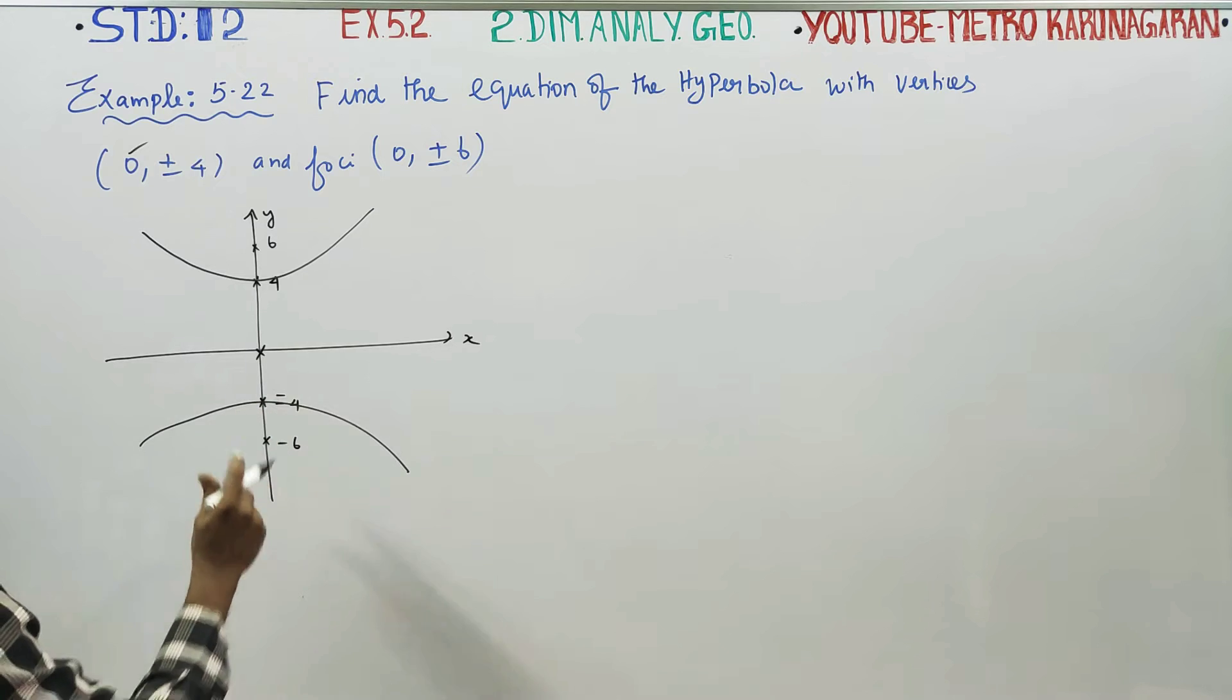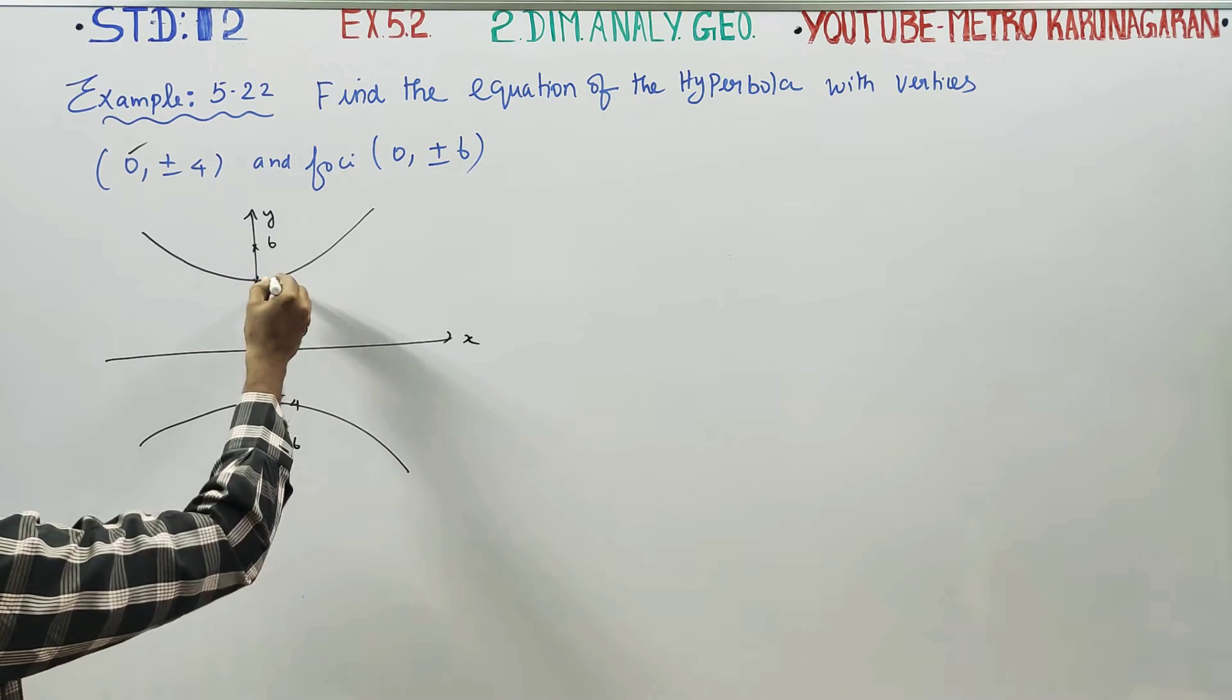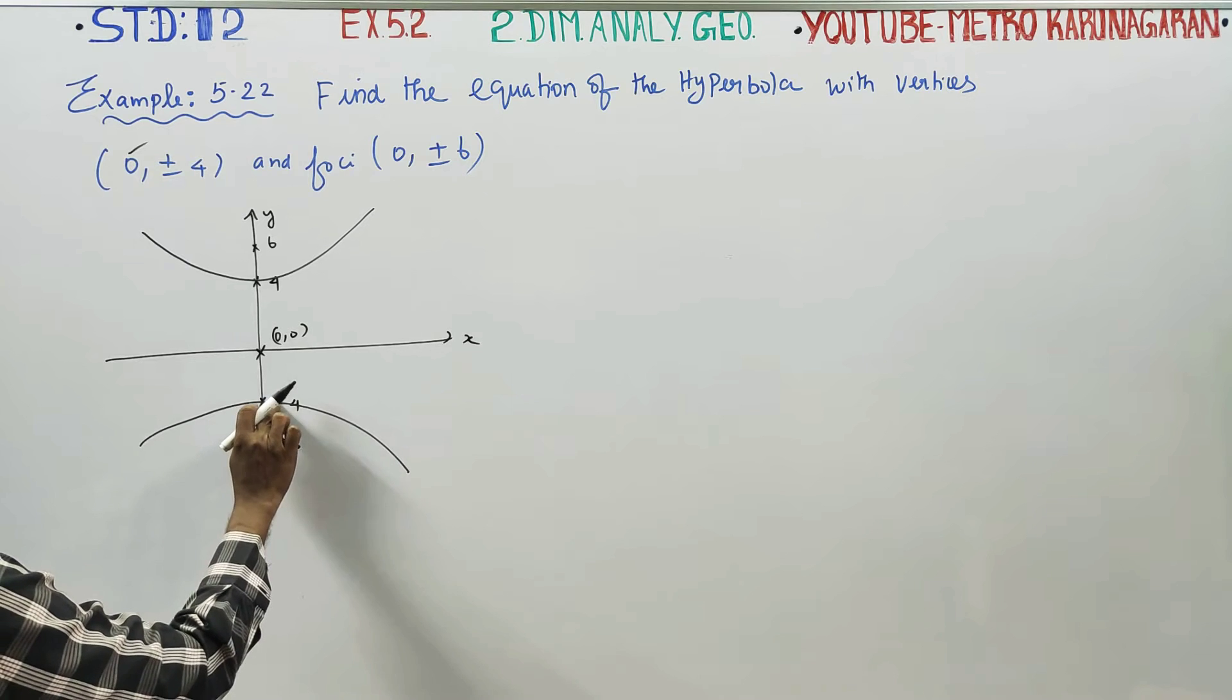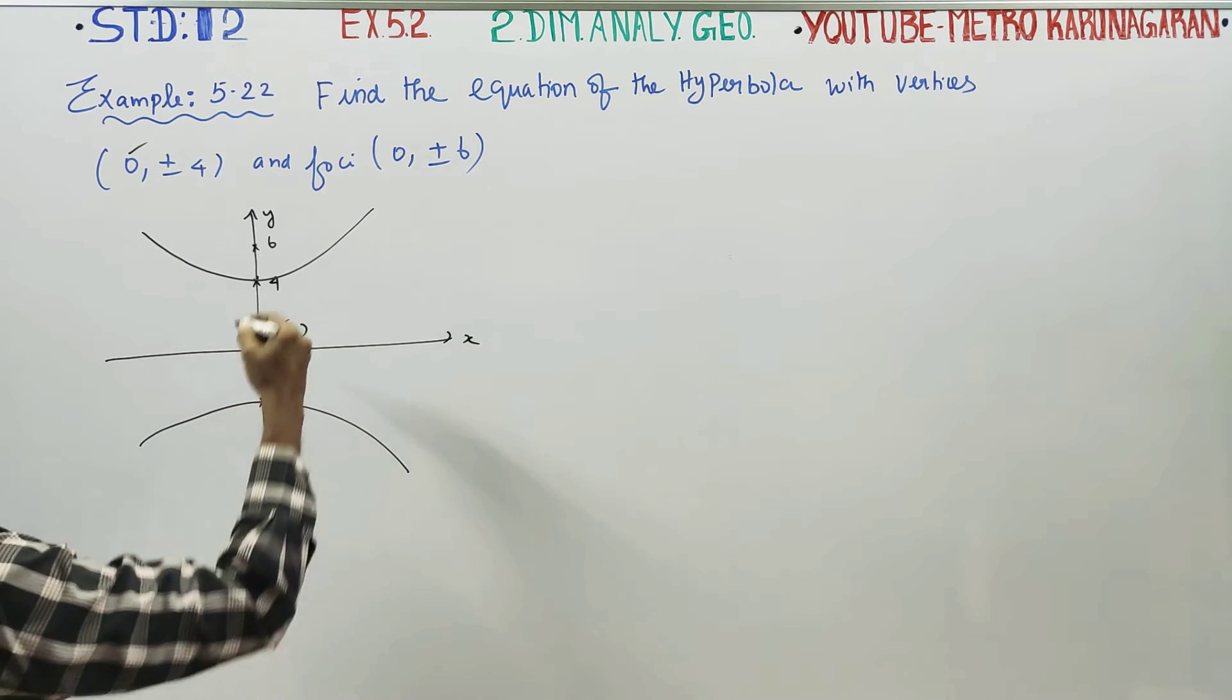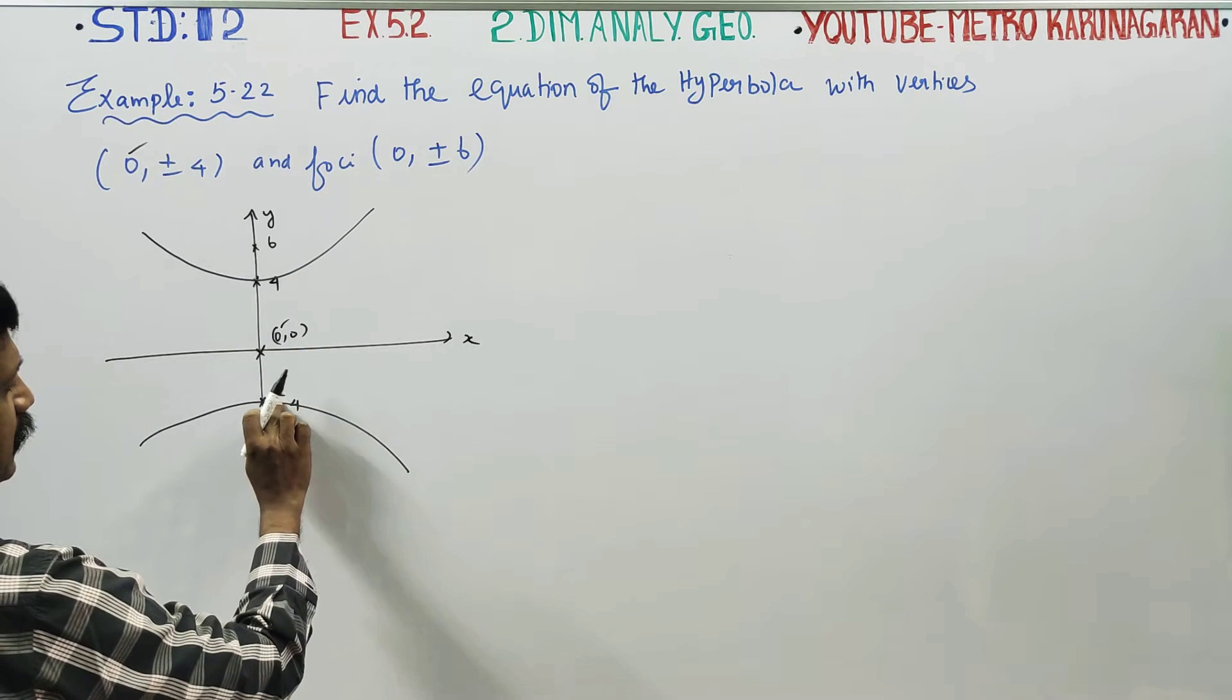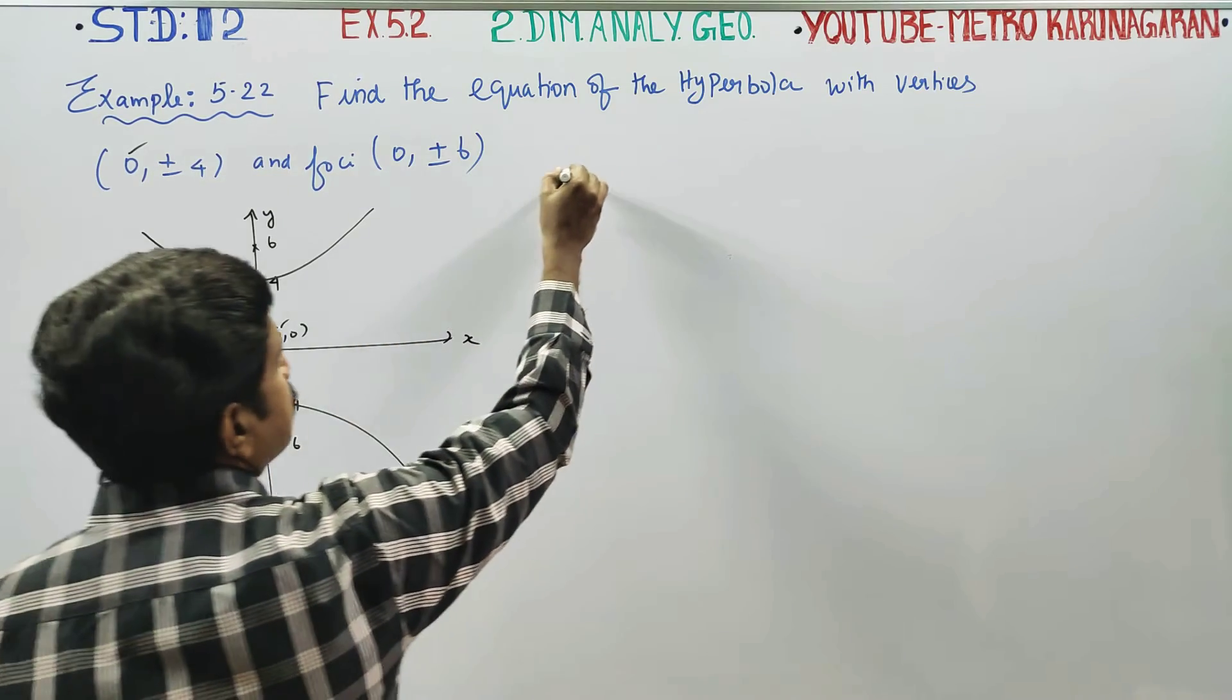If you look at this, this is the midpoint, you can find the origin. Naturally, this is my y-axis. That's why x is 0. Then, y1 plus y2 by 2 is the center. The center is the origin.